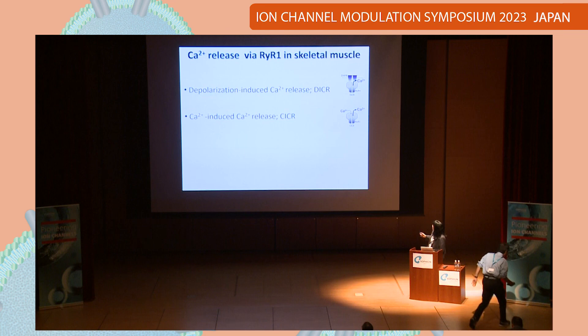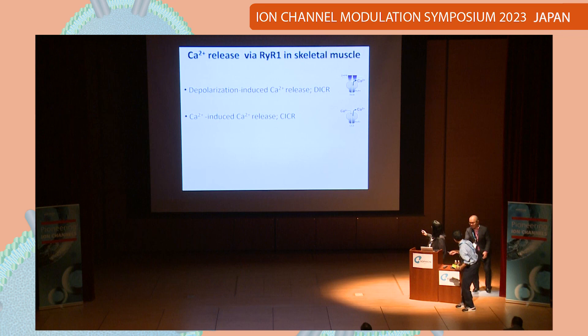There are two types of calcium release via RyR1 in skeletal muscle cells. One is depolarization-induced calcium release, DICR, which is physiologically important. The other is calcium-induced calcium release, CICR. Abnormal CICR is related to disease.